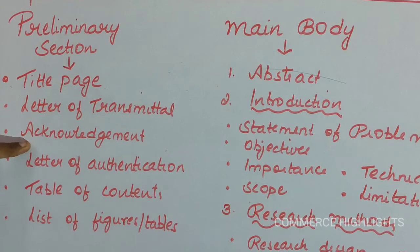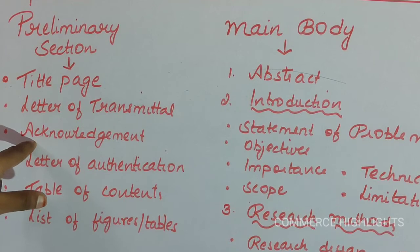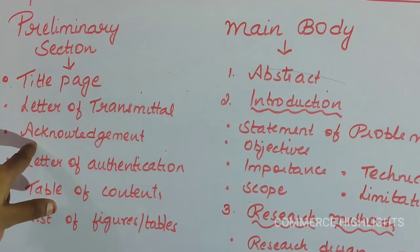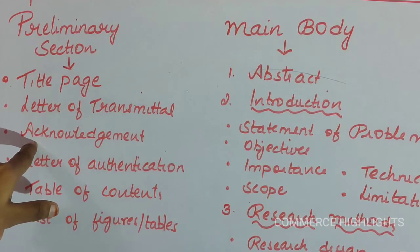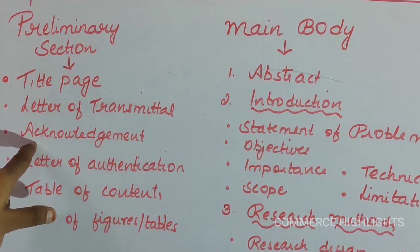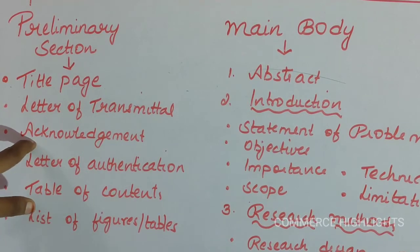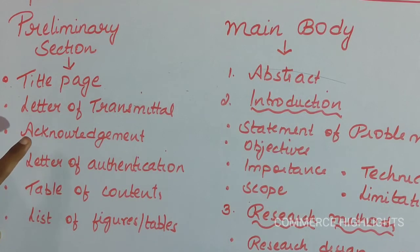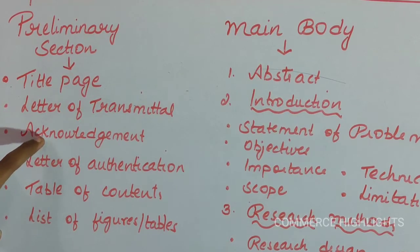The third point to be included is acknowledgement, which means the names of persons who have supported the researcher to complete the research — who guided the researcher, who supported the researcher to complete the research work in time, and who offered valuable suggestions. Those persons' names are included in the acknowledgement page, where the researcher expresses his gratitude and thankfulness.